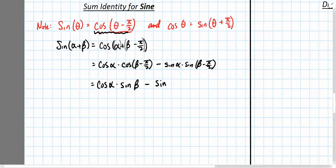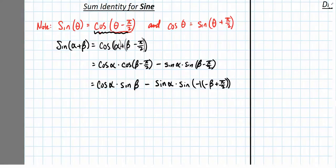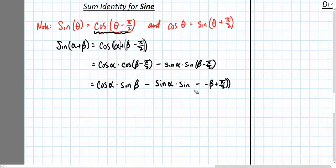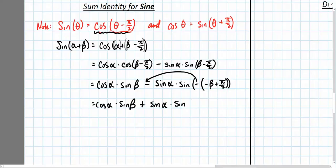Now I copy minus sine of alpha, and I'll rewrite this line by factoring out a negative 1, giving us negative 1 times negative beta plus pi over 2. Doing that unusual factor does two things for us. It allows us to take this negative symbol inside the sine function, and because of our even and odd identities, we can bring this negative out and change the sign inside to a plus. So we get cosine alpha times sine beta, plus sine alpha times sine of negative beta plus pi over 2.